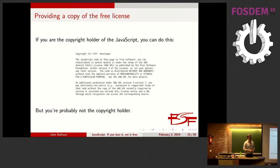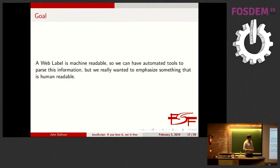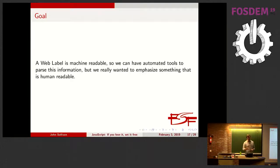You're probably not the copyright holder for most of the JavaScript you're working with. This format was announced back in 2012. The full description is at /licenses/javascript-labels on gnu.org. The goal of the system is twofold: first, it's to be machine-readable so licensing information can be processed by browser extensions or server tools. But the second thing is it really does need to be human-readable — most free software licenses require that you tell the person that what they're receiving is free software and inform them of the rights they have.